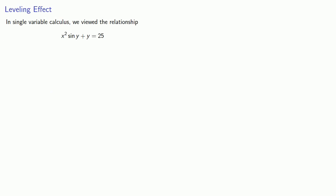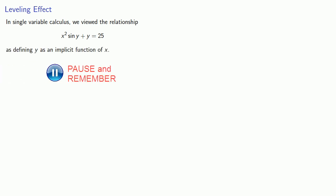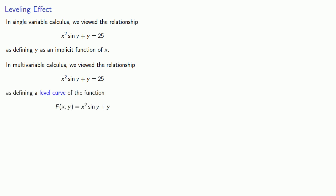Let's think about this a little more. In single variable calculus, we viewed x squared sine y plus y equals 25 as defining y as an implicit function of x. But a different way of looking at this comes from multivariable calculus, where the relationship is a curve defined by a function equal to a specific constant — in this case, 25.